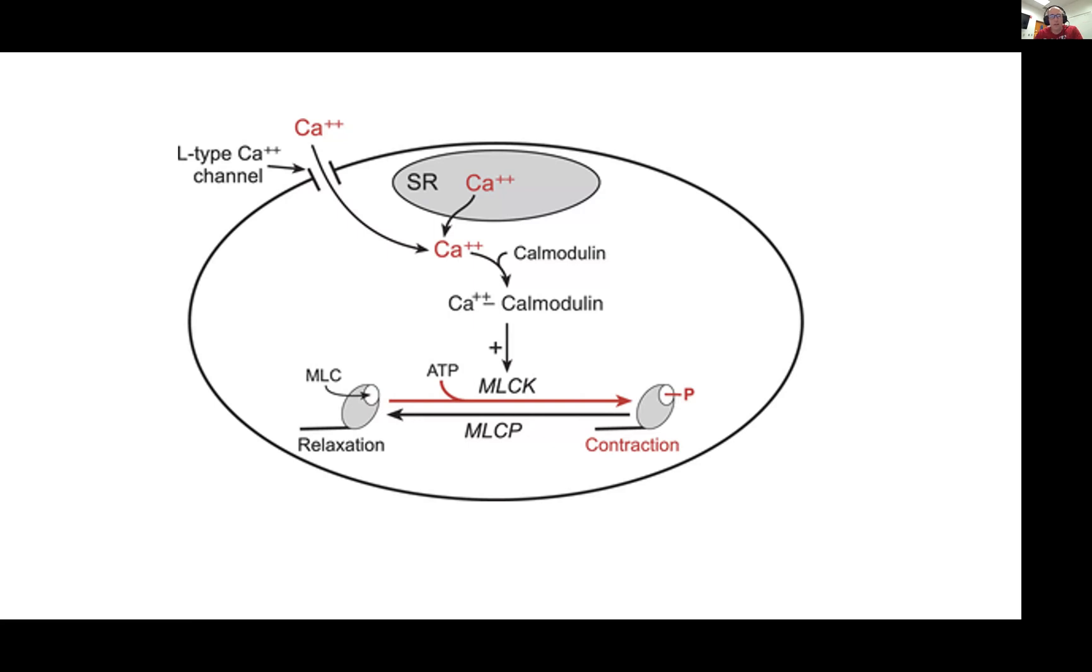This diagram here is a smooth muscle cell. Similar to skeletal muscle cells, you have myosin and actin. The interaction between actin and myosin is what causes smooth muscle contraction. But how we get that actin and myosin to interact is a little bit different in smooth muscle than it is in skeletal muscle.